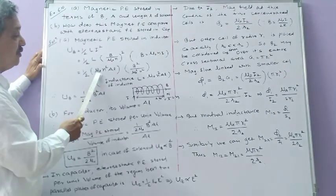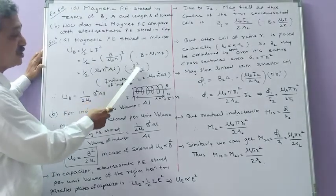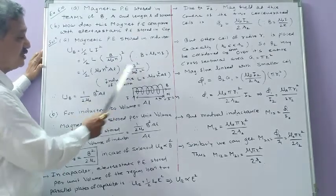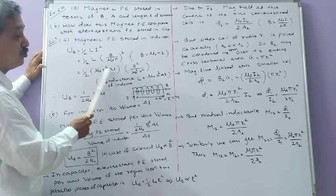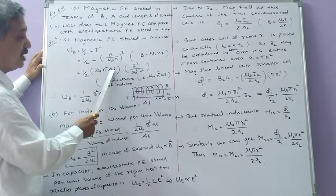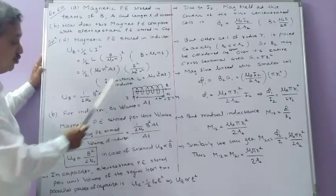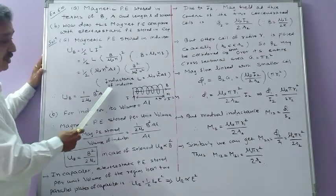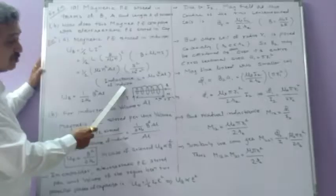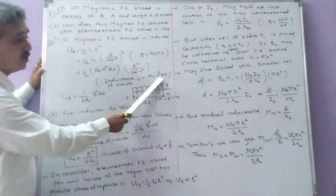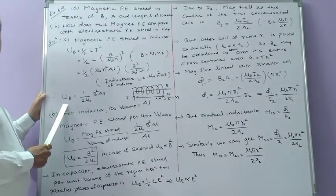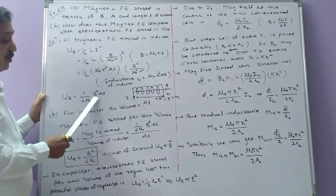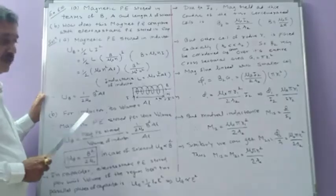The self-inductance of such a solenoid is L = mu0 N squared A times length. Substituting I squared = B squared upon (mu0 squared N squared), the N squared cancels and one mu0 cancels. The result is Ub = (1/2 mu0) B squared A L. This is the formula for magnetic potential energy stored in the solenoid in terms of magnetic field B, area A, and length L.